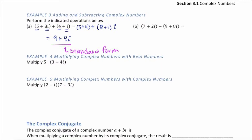For example b, we have 7, and notice I have to distribute the negative. So this is 7 minus 9, plus 2i minus 8i, giving us negative 2 minus 6i. Again, don't factor anything out — please leave your answer with the real part and the imaginary parts separated.